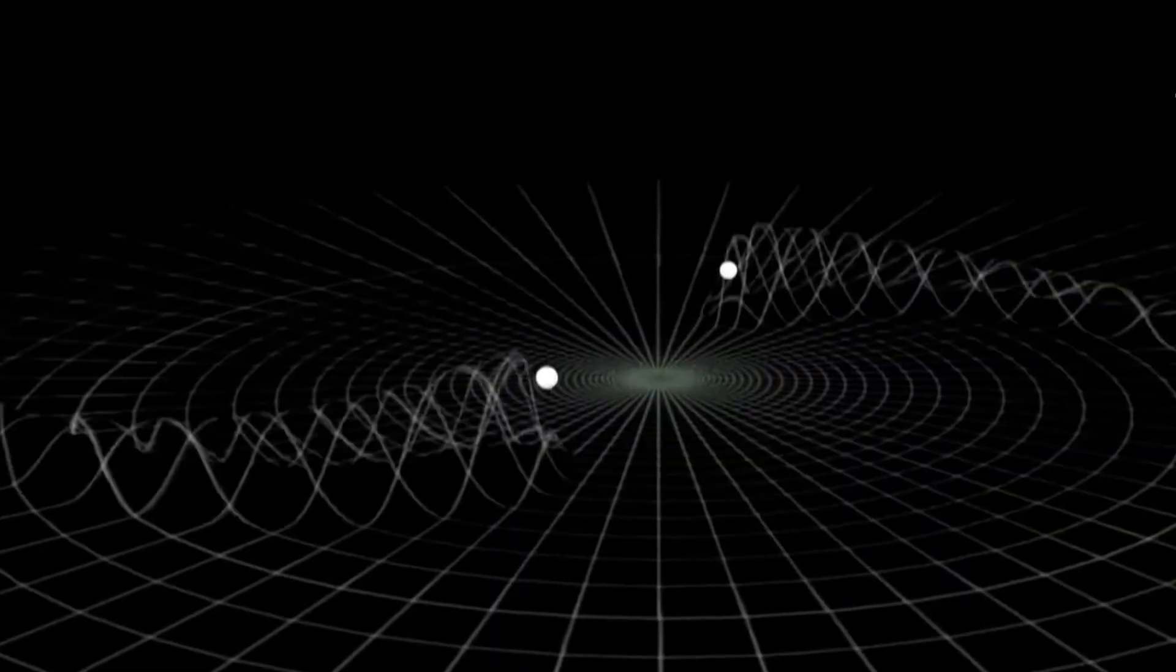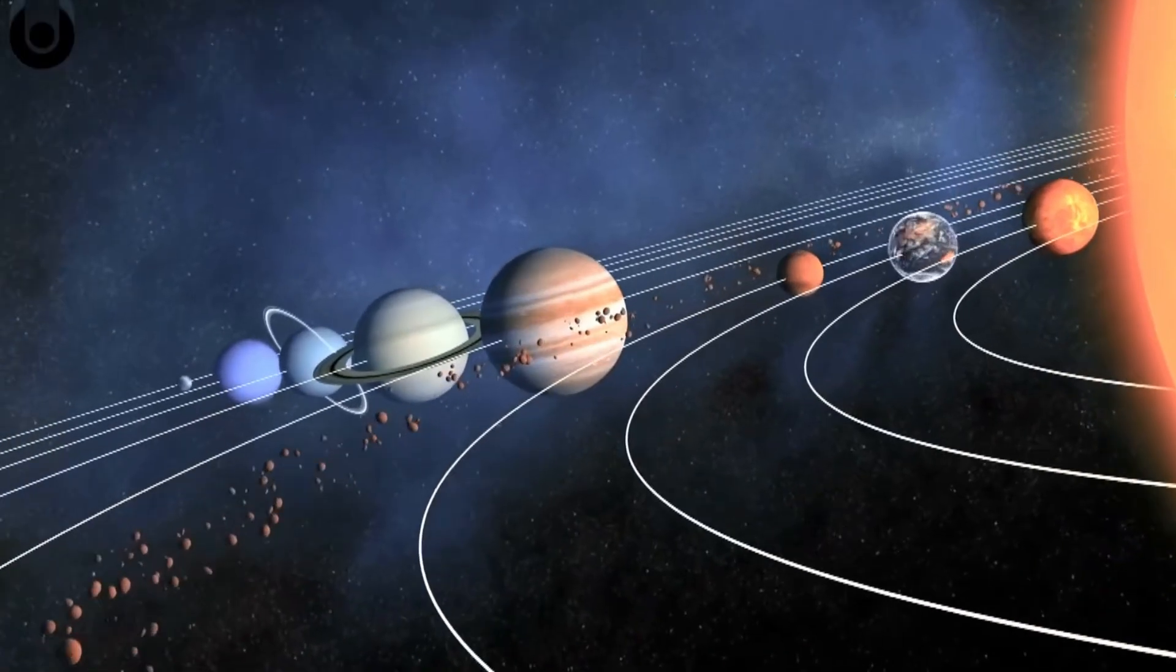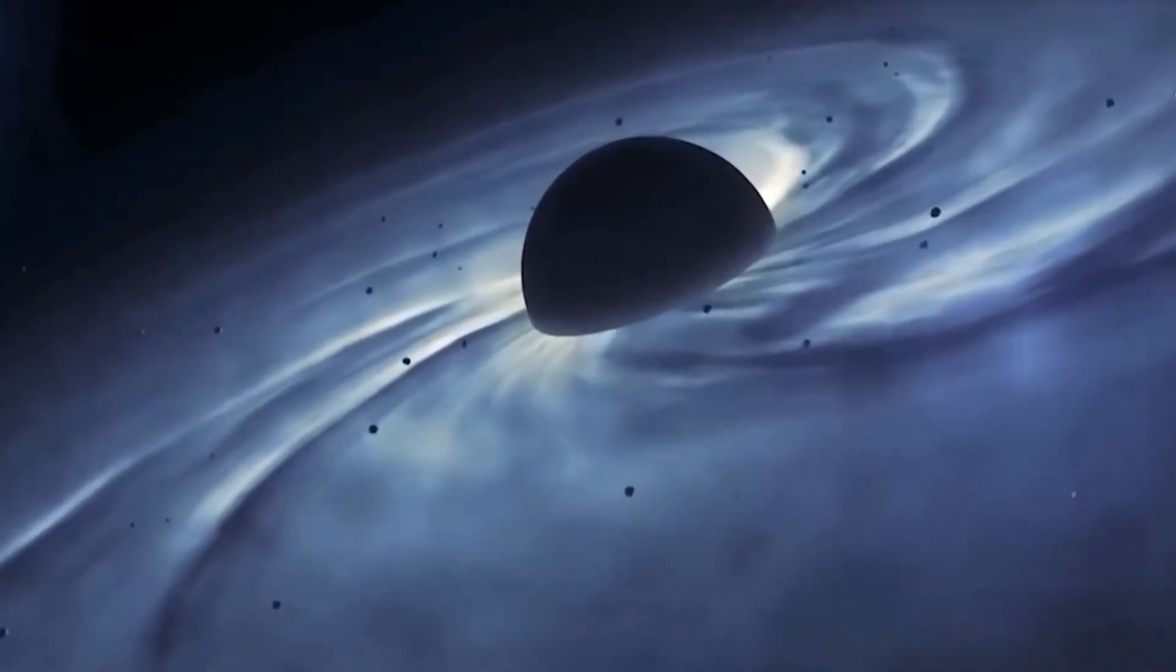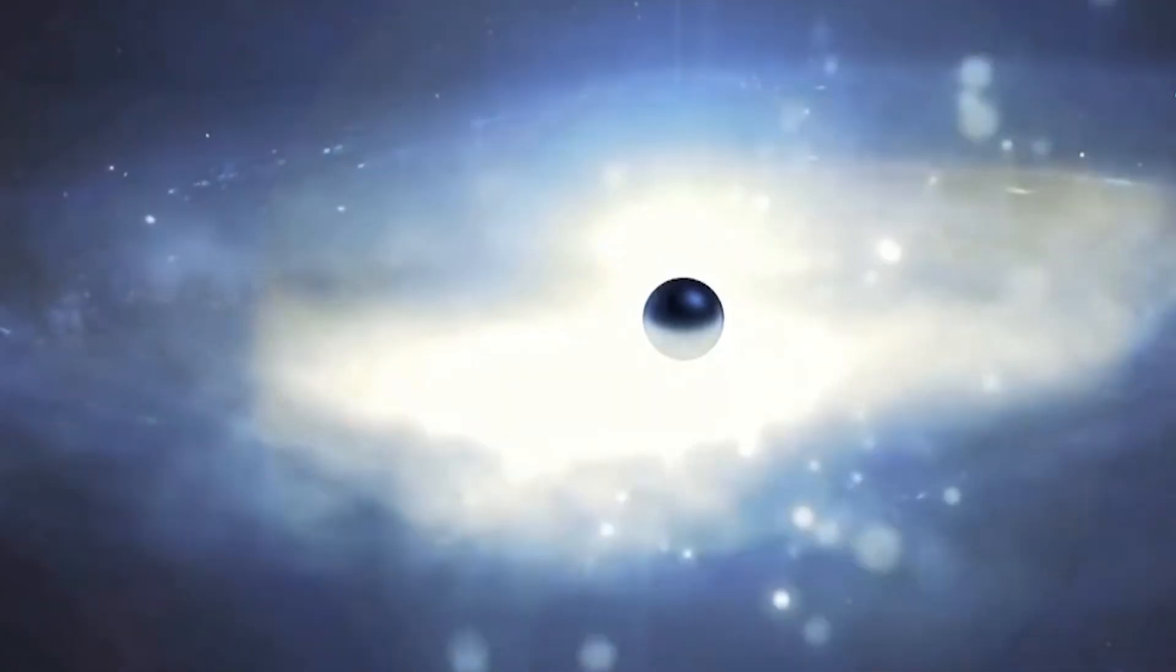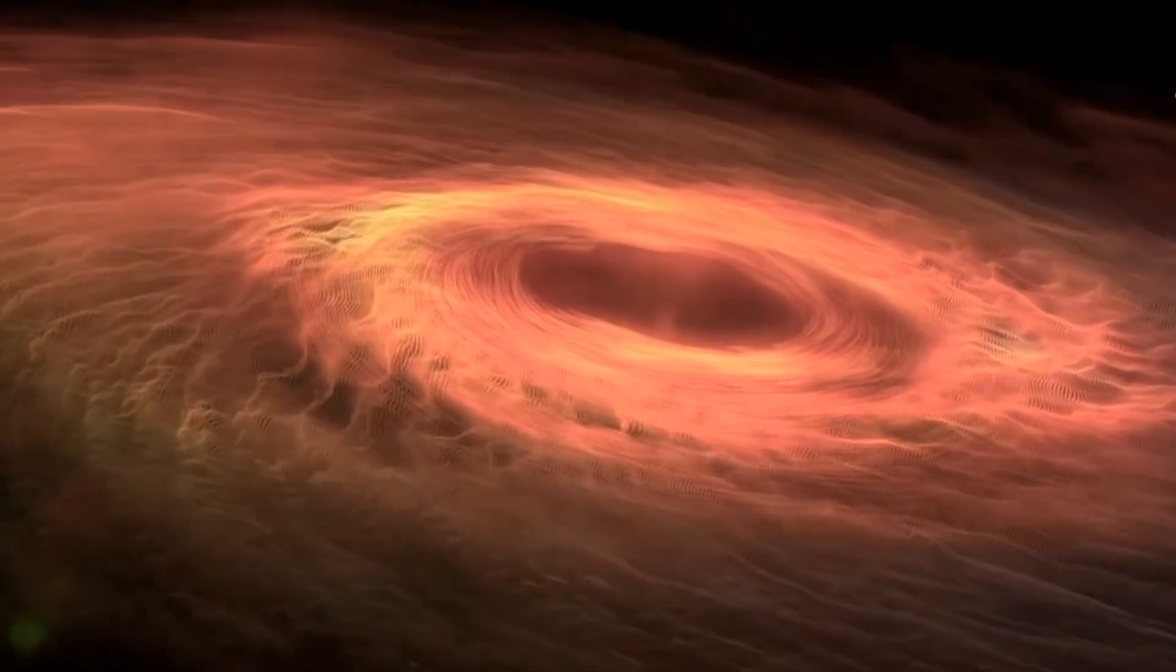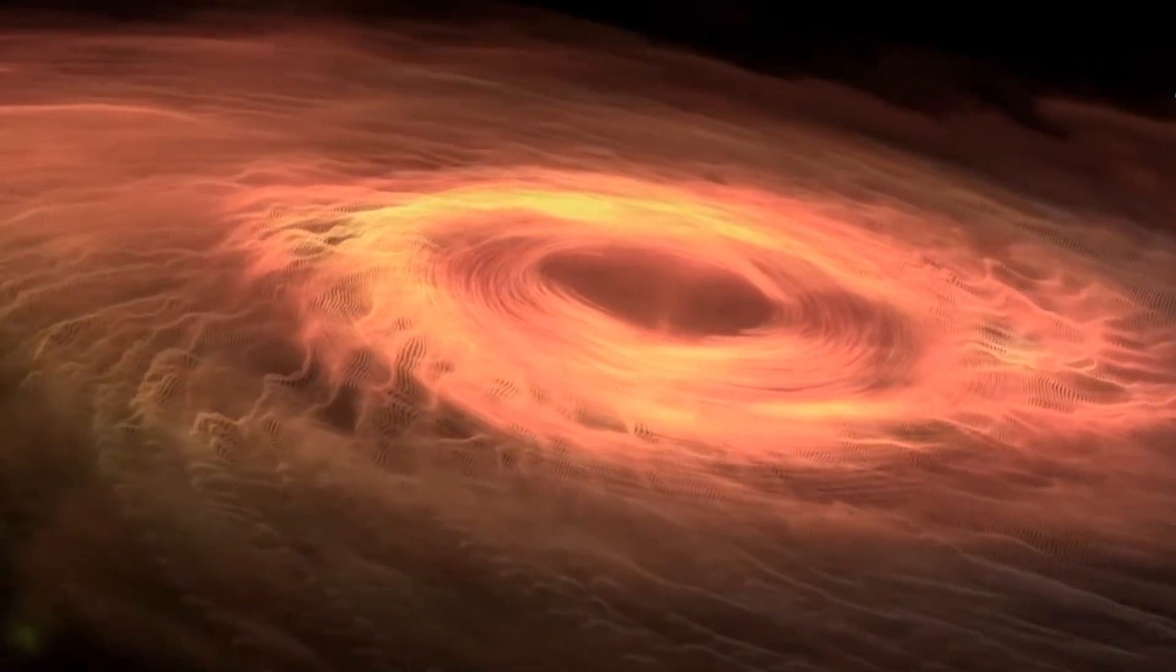Vast spinning black holes act like violent vortexes of space and time. Einstein's general relativity tells us that spinning objects twist the space around them. This is known as frame-dragging. Inside this frame-dragging zone, our spacecraft spirals so wildly that the sense of time completely collapses.